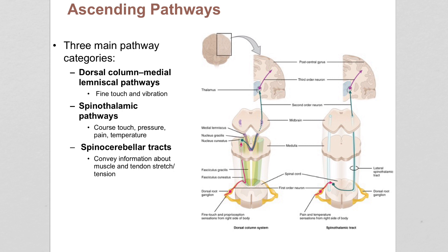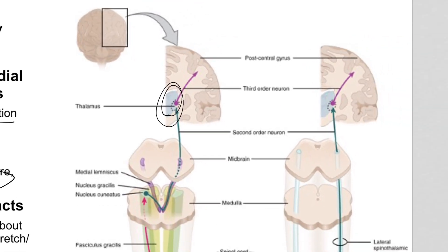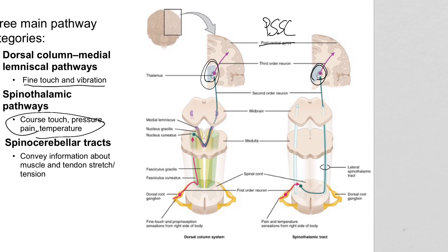We've got a few pathway examples here. The dorsal column medial lemniscal — or DCML — and the spinothalamic are very similar. The difference is DCML is for fine touch, and spinothalamic is for deeper pressure, pain, and temperature. What they have in common: they start at a receptor in the skin, enter the spinal cord, both run through the thalamus as their relay point, and both wind up in the somatosensory cortex — the post-central gyrus. The three neurons are the first, second, and third order neurons.